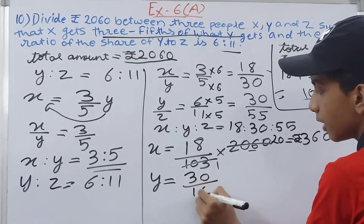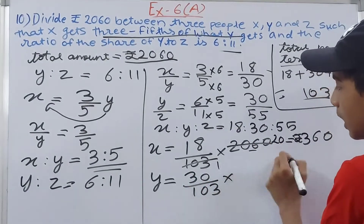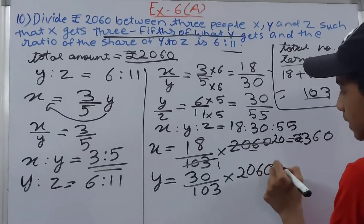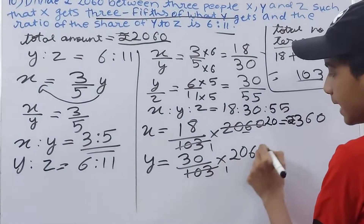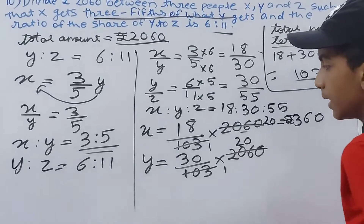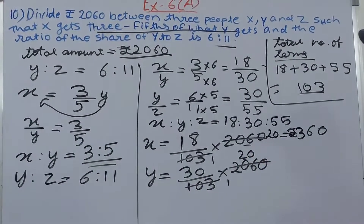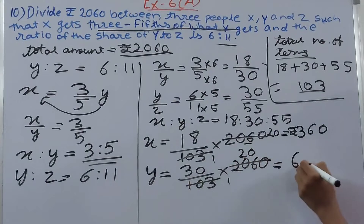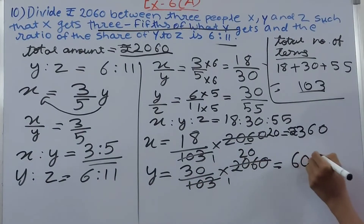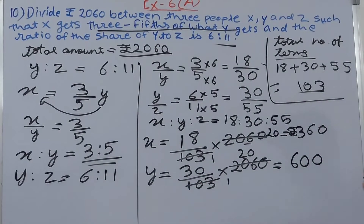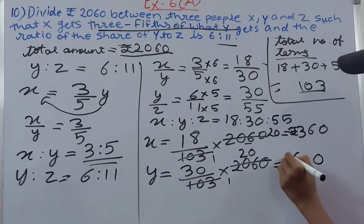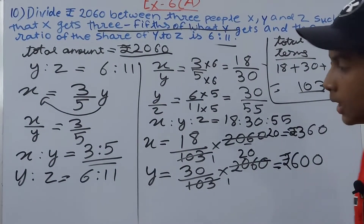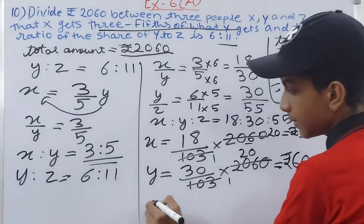The share of Y equals 30 upon 103 multiplied by 2060. Again 2060 divided by 103 is 20, so 30 multiplied by 20 equals 600. Y gets rupees 600.